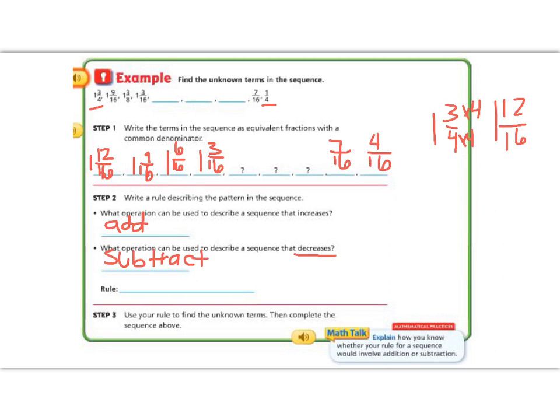Okay, so now that we know that, let's pick 2 that are next to each other, and let's go ahead and subtract. So 7/16 minus 4/16 gives me 3/16. So my rule is that I'm going to subtract 3/16.